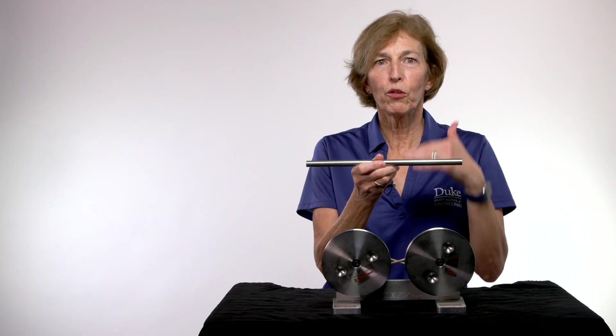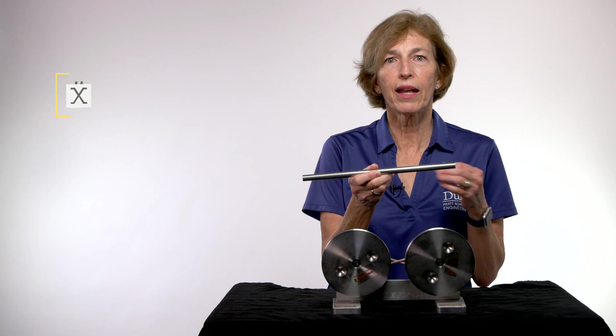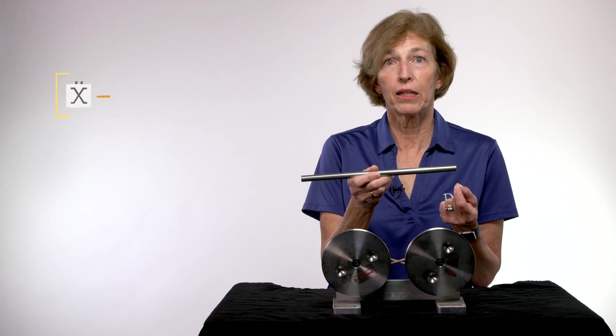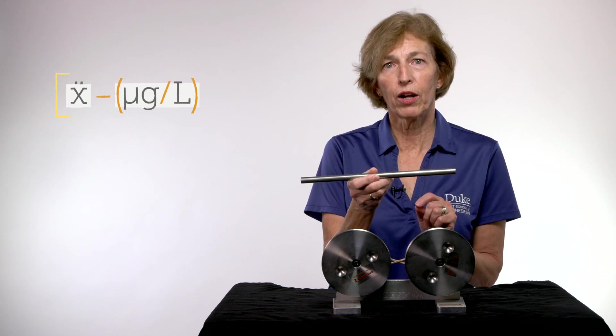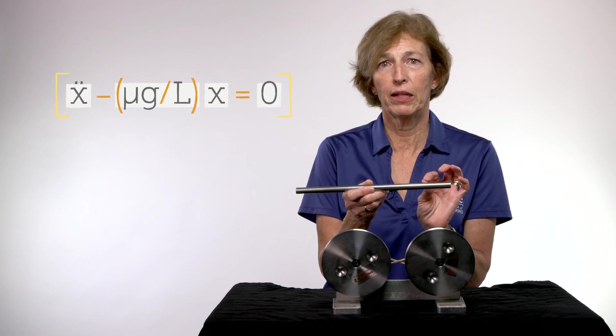And we go through the same substitution. So the friction forces become the normal forces times mu. And those normal forces get replaced with their functions that have X in them. After we do all of that, our differential equation for the motion this way is going to look like X double dot minus mu G over L times X is equal to 0. This time we have the minus sign.